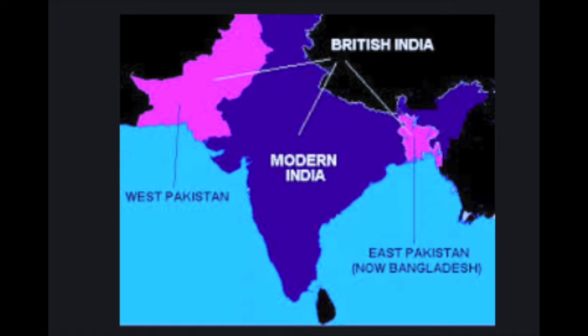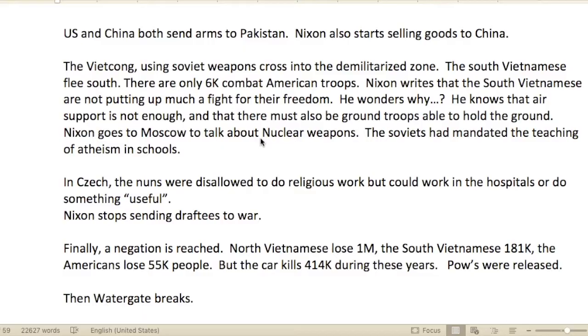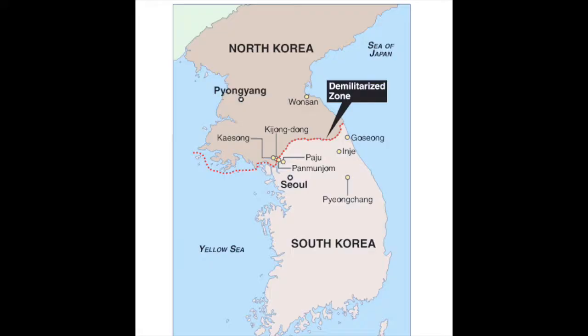You have to remember — can you imagine running a country separated by your enemy? There was no way to drive from East to West Pakistan without going through China or India. Very difficult to rule when you have to take a plane to get from one side of your country to the other. The U.S. and China both sent arms to Pakistan. Nixon also started selling goods to China.